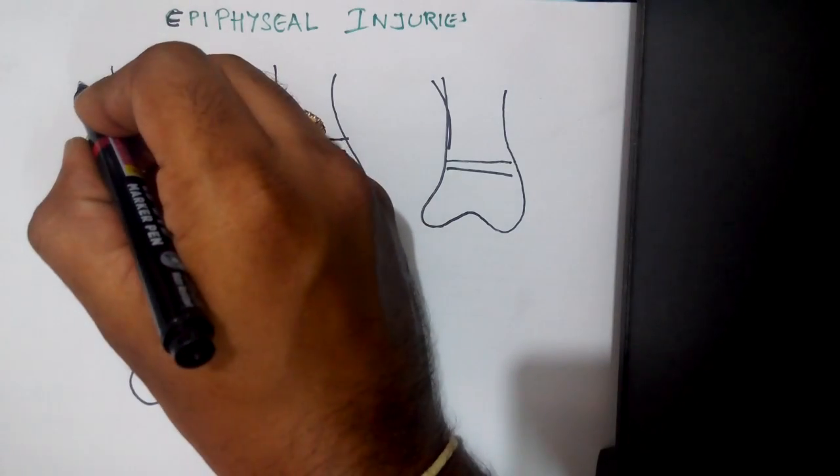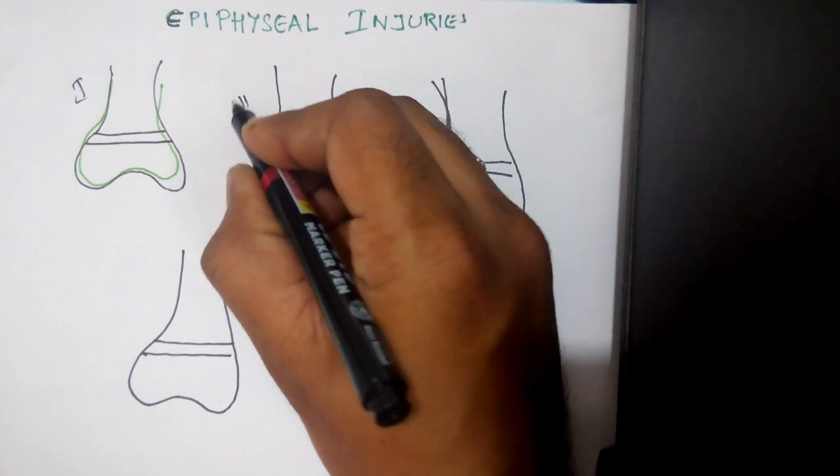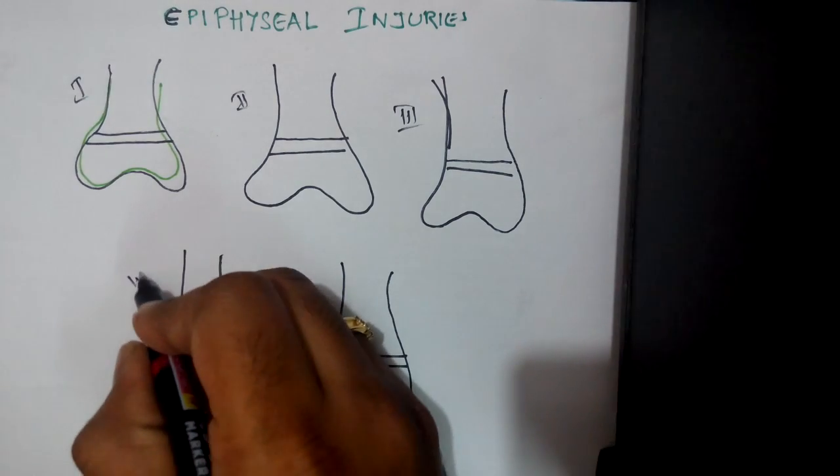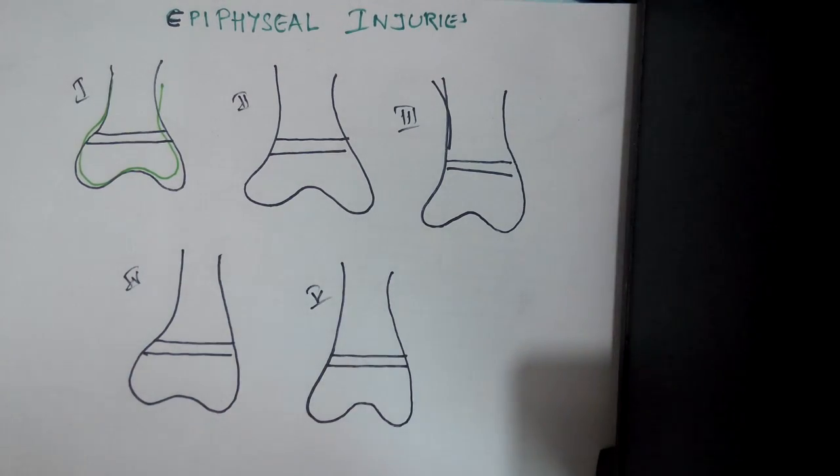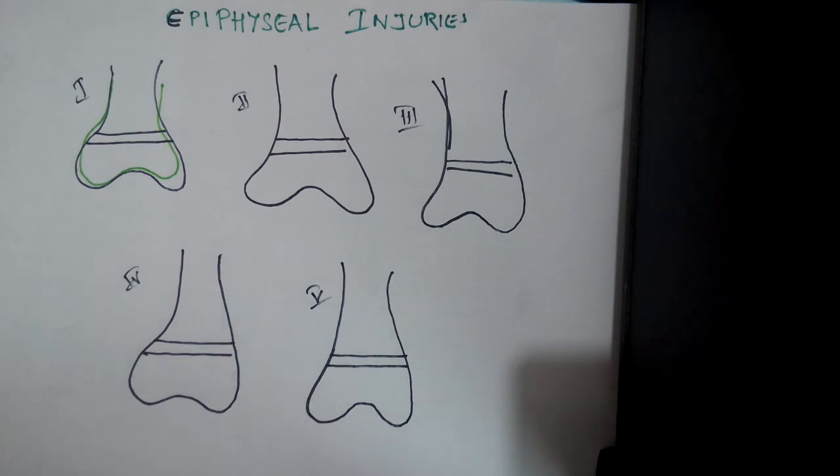Type 1, 2, 3, 4, and 5. Here is a pictorial representation of types 1 to 5. How does the fracture line traverse?